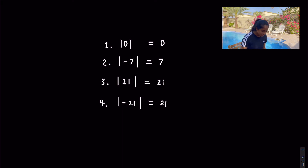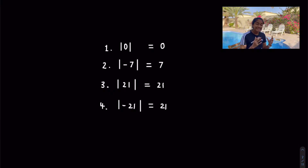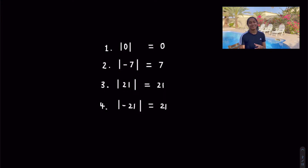Number 3 is already positive, so it's free to go — it doesn't need to go through the filter. Number 4 is negative 21. We strip away the negative sign because in the modulus function we don't accept any negativity, so the answer is 21.